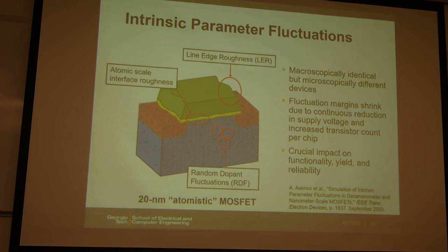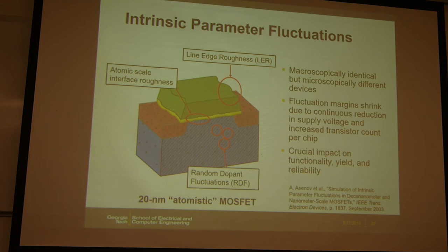Regarding whether there is a method to create more uniform doping: there is no way to precisely place dopants into the channel through fabrication. Ion implantation is essentially a random process — you inject atoms, especially at small dimensions, and you get variations in both the number and locations of dopants. There is no way to control it.